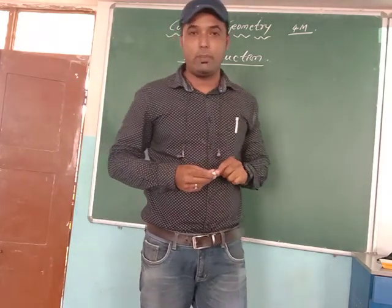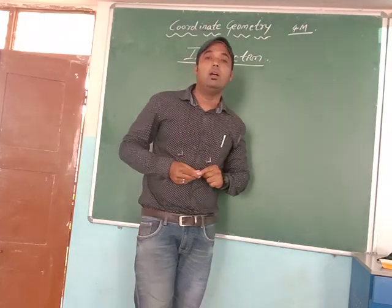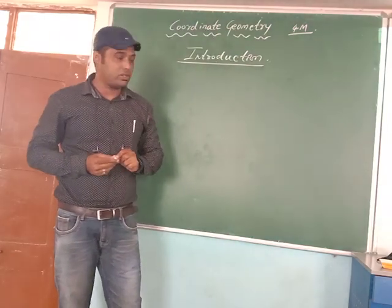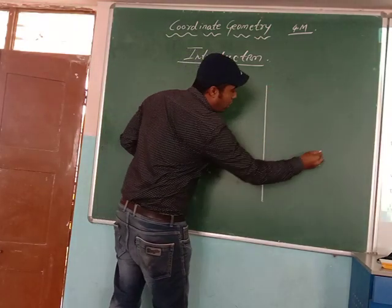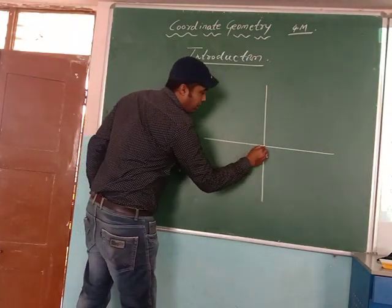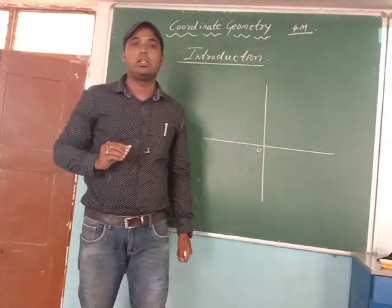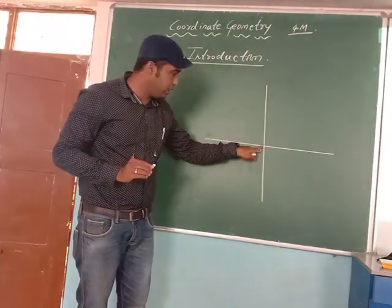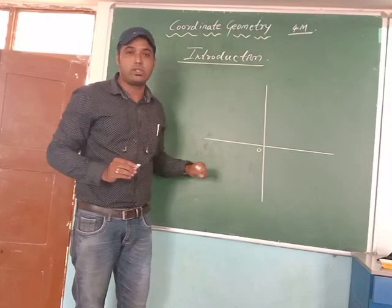Coordinate Geometry is a branch of mathematics in which we will discuss about the pair of points. You need to understand the concept of Cartesian Coordinates. Here, this is called as Origin. Always, the Origin is denoted by capital O. And in every graph, there will be two axes.